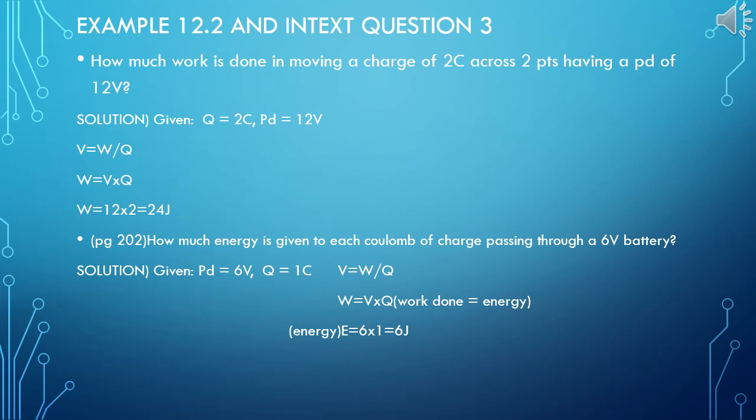Index question which is given in page number 202: how much energy is given to each coulomb of charge passing through a 6 volt battery? And the solution is given: potential difference 6 volts, charge is equal to 1 coulomb. And the formula already knows, that is V is equal to W by Q. W is equal to V into Q. Substitute the values, you will get 6 joules.